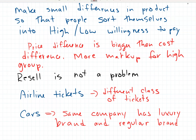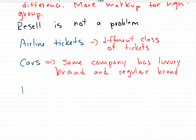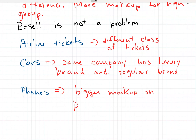One more example is phones. More storage is used as a way to attract people to buy a more expensive phone. For instance, one phone might have 32 gigabytes and another 64, with the 64GB version costing $100 more — but it doesn't actually cost $100 to add 32 gigs. This is price discrimination: there's a bigger markup on phones with more storage or special features, separating buyers into different groups based on their willingness to pay.